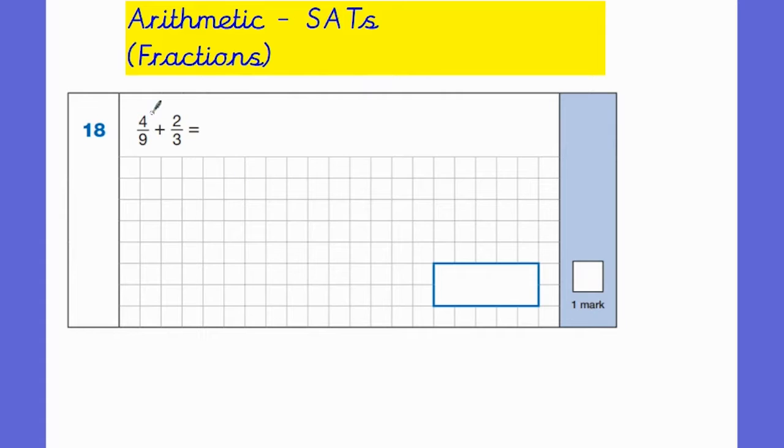So here we have adding fractions and in this question we have been given a common denominator, 9 and 3. So 4 ninths can stay as it is because in order to add fractions our denominators need to be the same. So then I need to think what do I do to 3 to get 9? I times it by 3, so whatever I do to the bottom I must do to the top. So 2 times 3 is going to be 6, 3 times 3 is going to be 9, which gives me an answer of 10 ninths. And then if I convert that into an improper fraction, 9 goes into 10 once with 1 left over. So 1 and 1 ninth, and don't forget to put your answer into the box there.